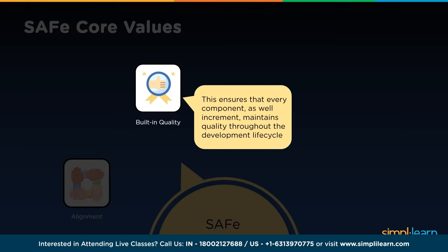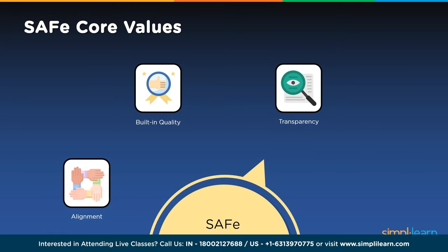Built-in quality ensures that every element and every increment of the solution reflects quality standards throughout the development lifecycle — quality is not added later. Building quality is a prerequisite of lean and flow; without it, the organization will likely operate with large batches of unverified, unvalidated work, leading to excessive rework and slower velocities that prevent quick responses to market dynamics. Transparency enables teams to rely on each other and build trust — wherever trust exists, high performance can happen.